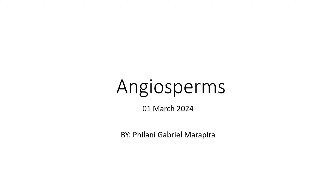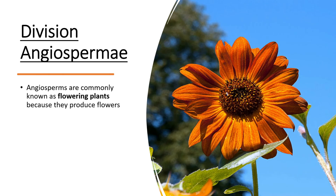Hello ladies and gentlemen, welcome to Educate. Today we're going to be talking about angiosperms as the last division under the kingdom Plantae — we're doing biodiversity of plants. Angiosperms are commonly known as flowering plants, because at some point in their life cycle they have to produce flowers. Here is an image of a sunflower, which is an angiosperm given that it produces flowers.